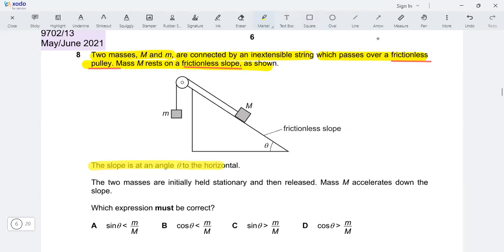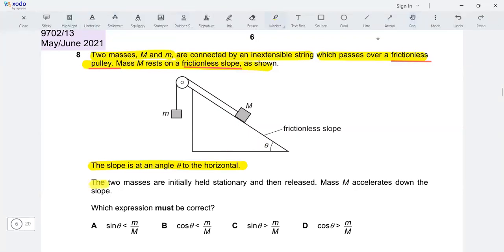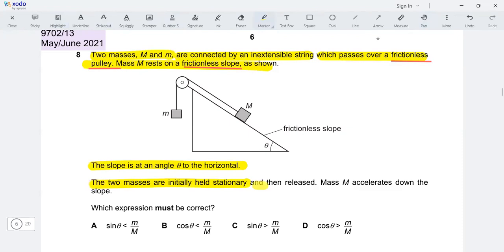Next, the slope is at an angle theta to the horizontal. Okay, the two masses are initially held stationary and then released. Mass M accelerates down the slope.